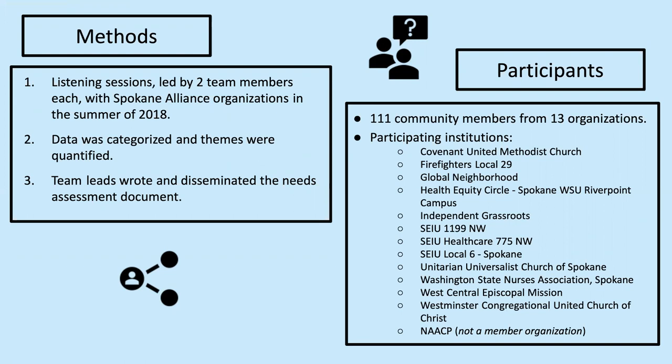We spoke with a total of 111 community members from 13 organizations. These organizations are listed on the bottom right of the slide and include churches, local education groups, and unions — a diverse representation of the Spokane community.